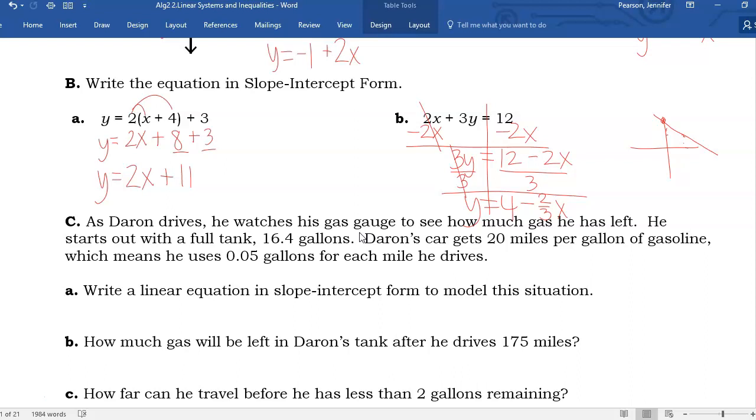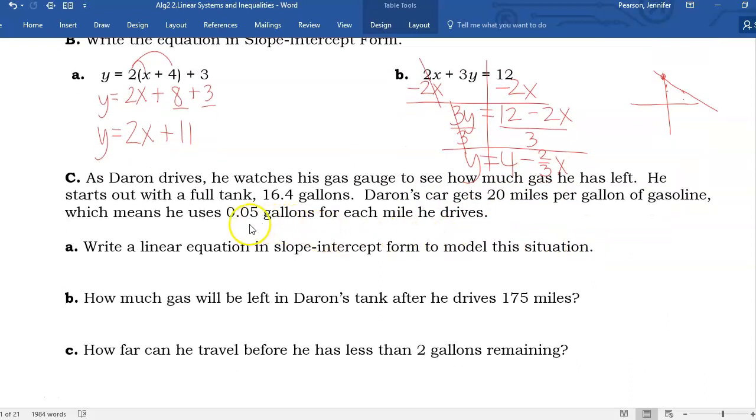Last example. As Daron drives, he watches his gas gauge to see how much gas he has left. He starts out with a full tank, 16.4 gallons. The car gets 20 miles per gallon, which means he uses 0.05 gallons for each mile he drives. Write a linear equation in slope-intercept form to model the situation. For slope-intercept form, I need the starting value and the rate of change. We start with 16.4 gallons. And here's my rate of change. I circled the word uses because he is using it, so it is subtracting it. We need a negative value. So if I'm going to write my y equals mx plus b, I need negative 0.05x plus 16.4.